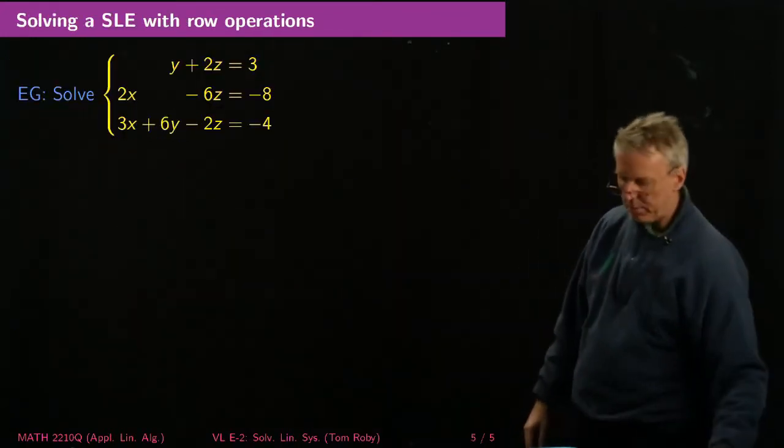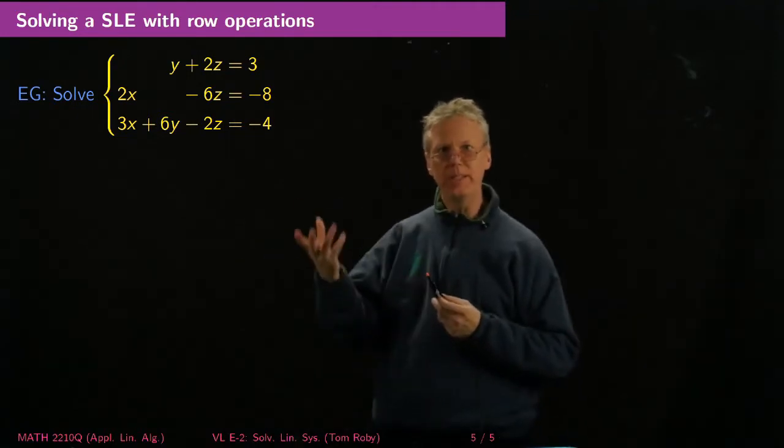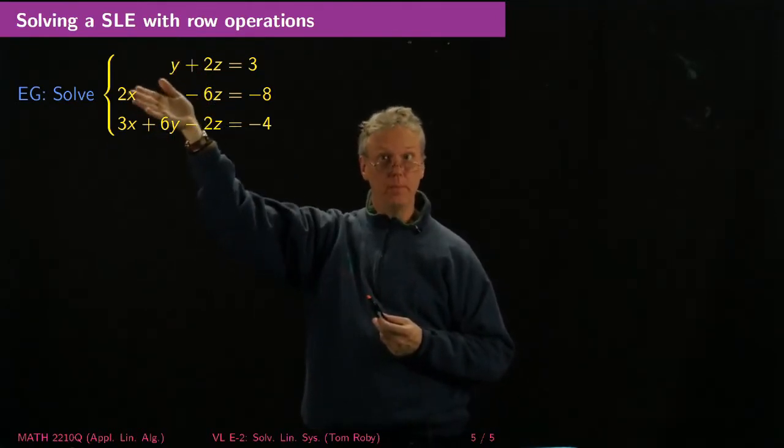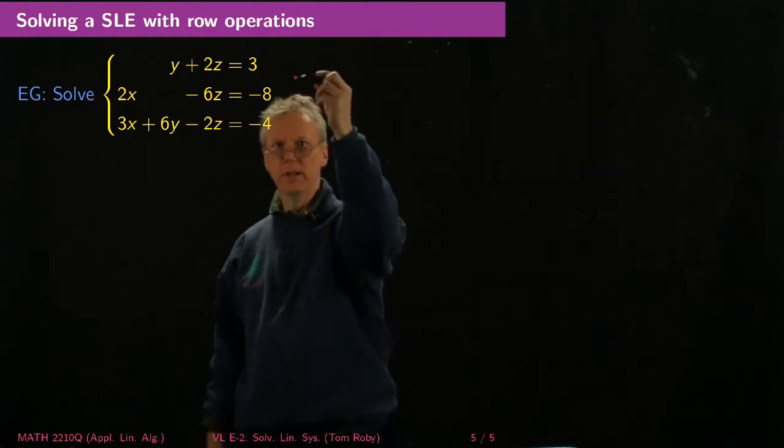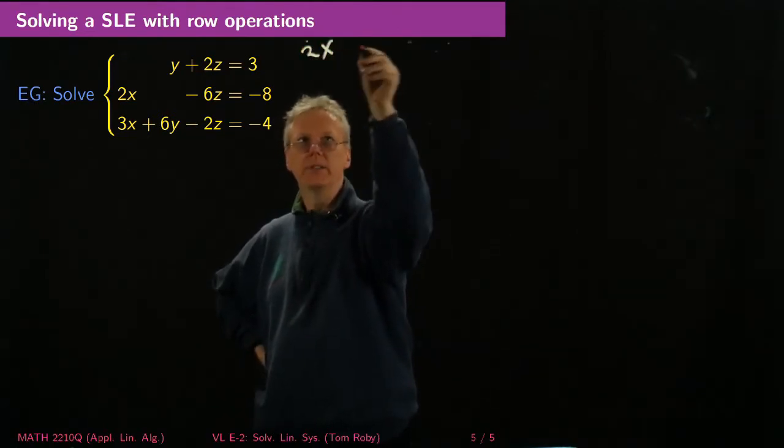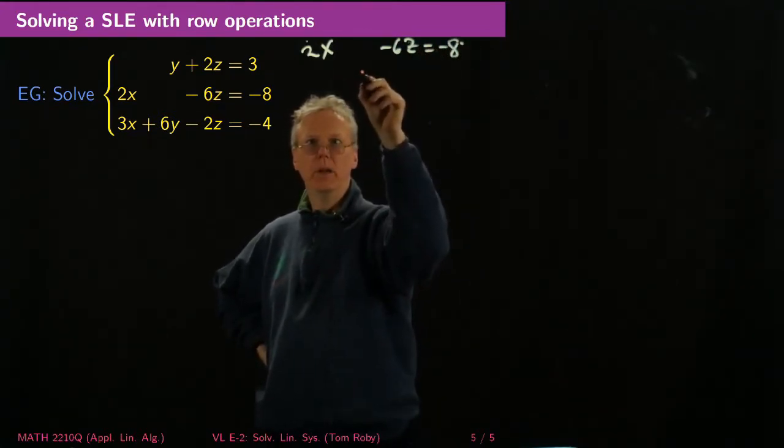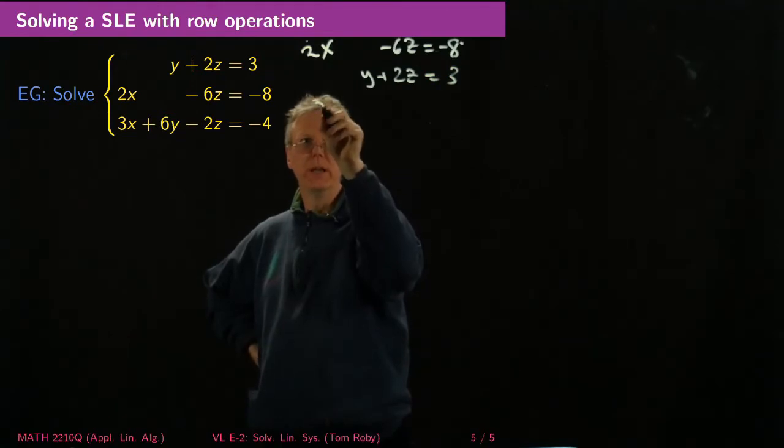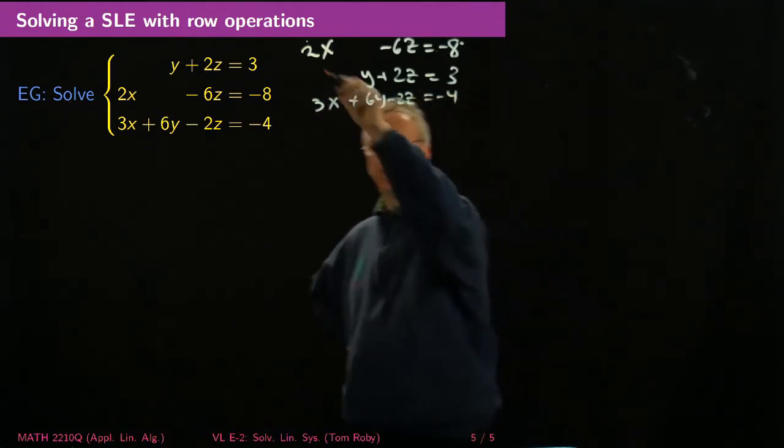Let me do one example for you full on so that you can see how this technique works. I want to be systematic. So I'm going to try to have only one equation with x variables and then I'll try to make things sort of triangular. So the first thing I want to do is interchange two rows. I want to make my top one be 2x minus 6z equals negative 8. I want to make the next one be y plus 2z equals 3. And then the last one will still be 3x plus 6y minus 2z equals minus 4. So now I've got this system.